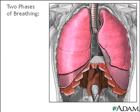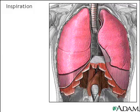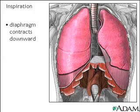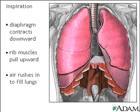The process of breathing or respiration is divided into two distinct phases. The first phase is called inspiration or inhaling. During inhalation, the diaphragm contracts and pulls downward. At the same time, the muscles between the ribs contract and pull upward. This increases the size of the thoracic cavity and decreases the pressure inside. As a result, air rushes in and fills the lungs.